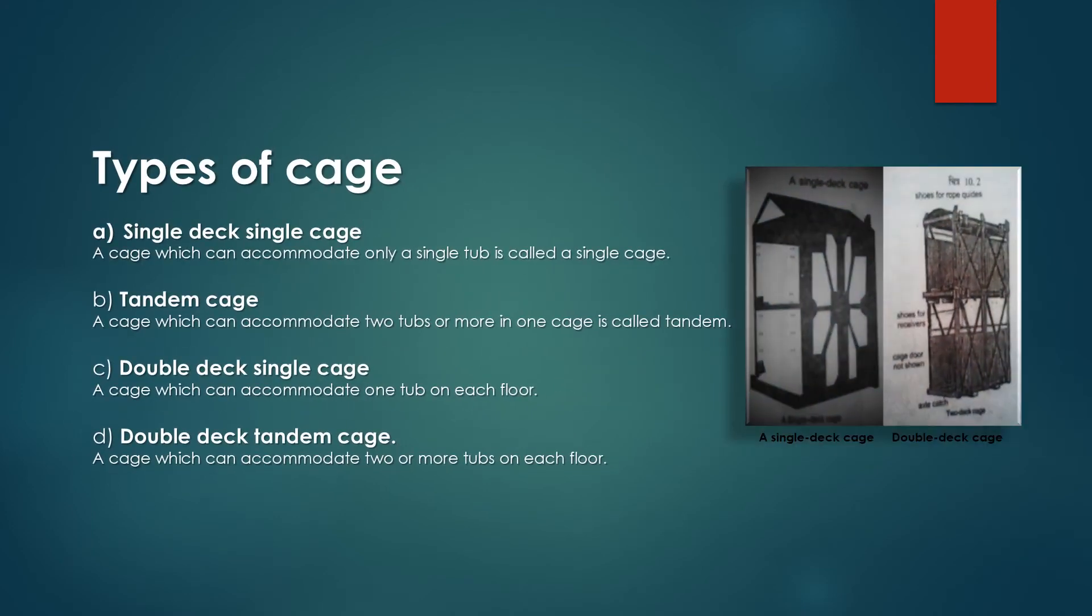Types of Cage. Single deck, single cage. A cage which can accommodate only a single tub is called a single cage.